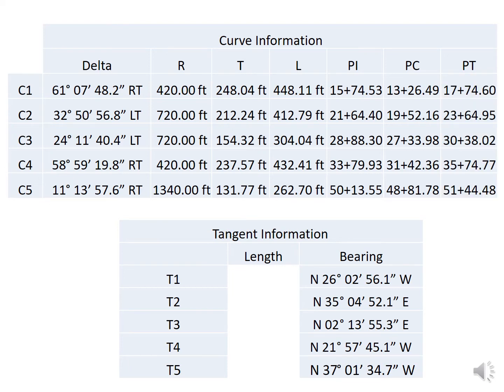We can also determine the PT. The PT is equal to the PC plus L — the station of the point of curvature plus the length of the curve gives us the PT. Moving on to the tangents, we can determine the length of those tangents by looking at the distance between the PT of a preceding curve and the PC of the following curve. With this information in these two tables, we could actually recreate the alignment from what we've extracted from those design plans.